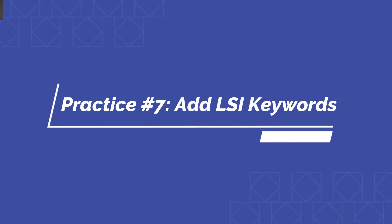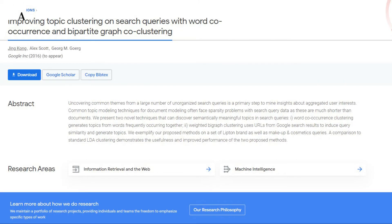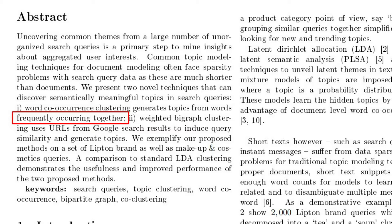Another very important practice is to add LSI keywords to your articles, which has a lot to do with semantic SEO. Many marketers have the opinion that LSI keywords do not exist, including John Mueller, the search advocate for Google, who stated: 'There is no such thing as LSI keywords — anyone who is telling you otherwise is mistaken.' However, this publication says that Google does use words that frequently occur together. So, to stay accurate, the LSI keywords are words that occur frequently with topic anchors in a given set of queries, and Google is looking for word co-occurrence to generate topics and better understand your content.